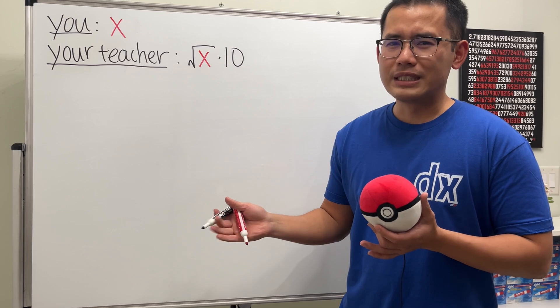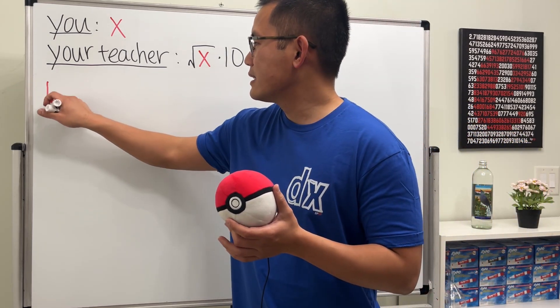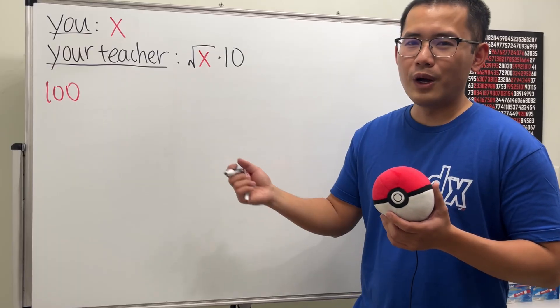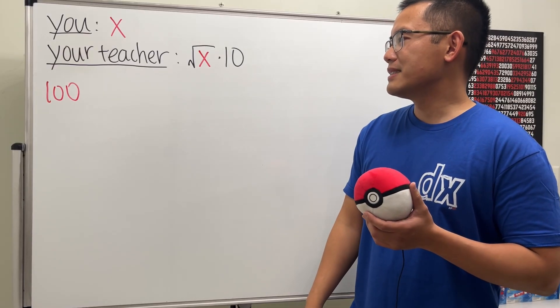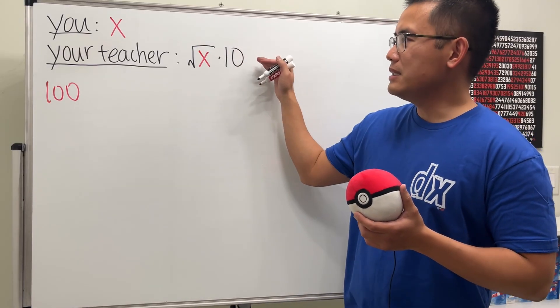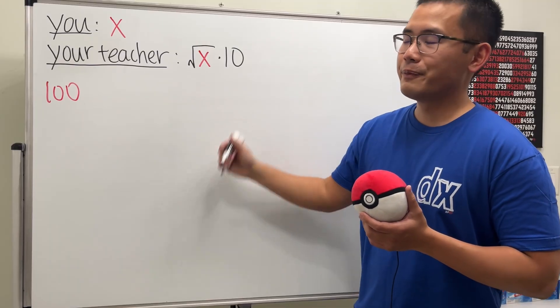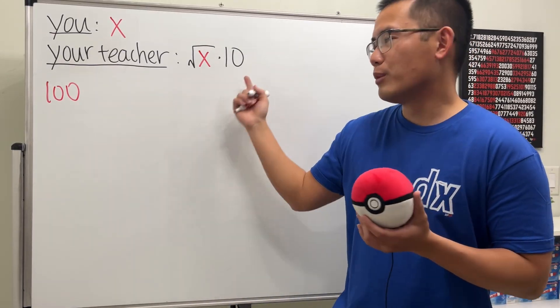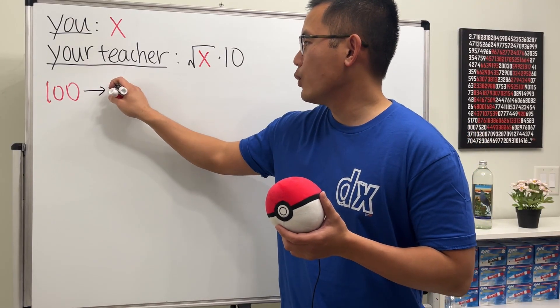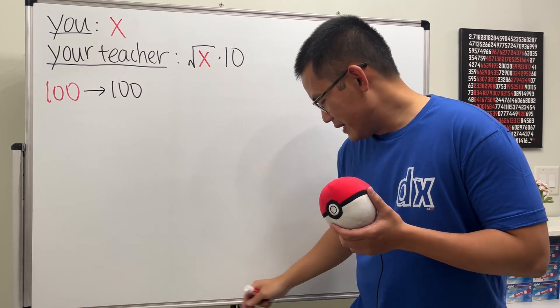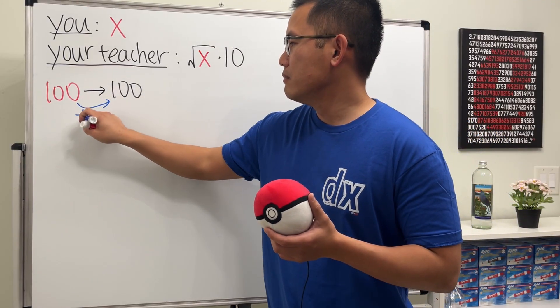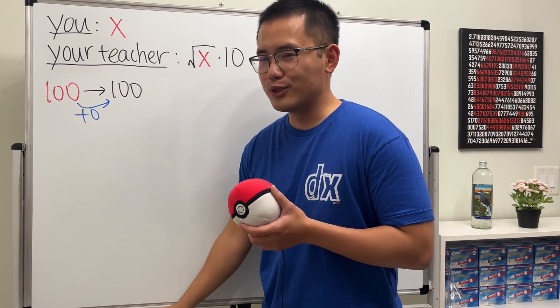Let's see a few examples first. So suppose today you are studying really hard and you get 100 points on the test. But you know what? If this is the curve, once we take the square root, you get 10 and you multiply by 10, you still get 100 points. So here, you don't really gain anything. But you should not complain because you have 100 points already, right?